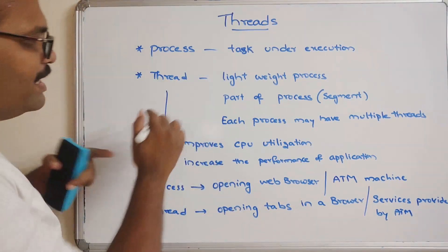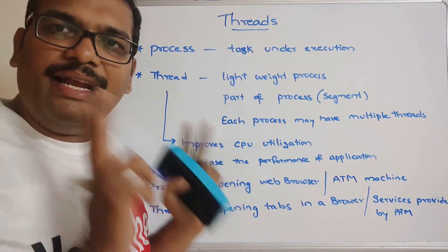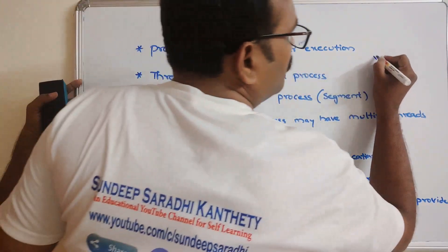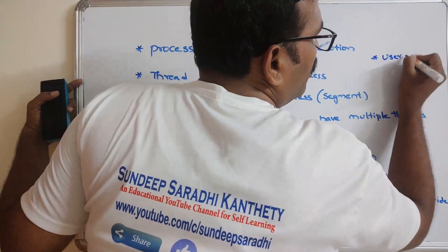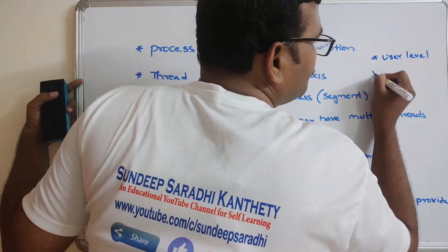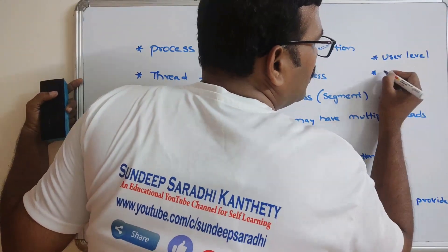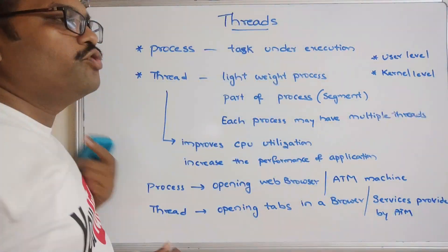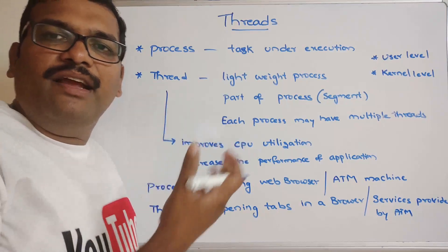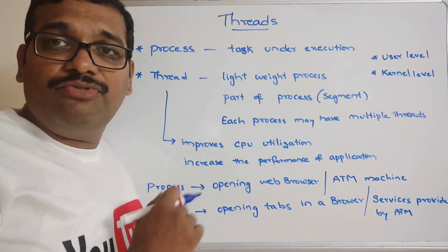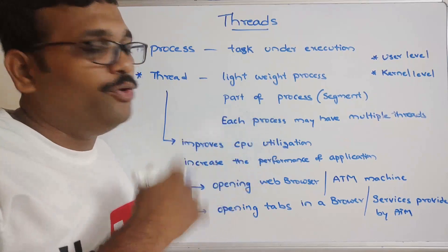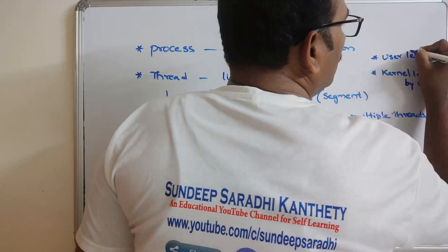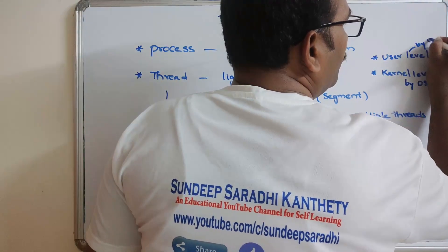These threads are classified into two categories. One is user-level threads and the other is kernel-level threads. User-level threads are created by the users, and kernel-level threads are created by the operating system.